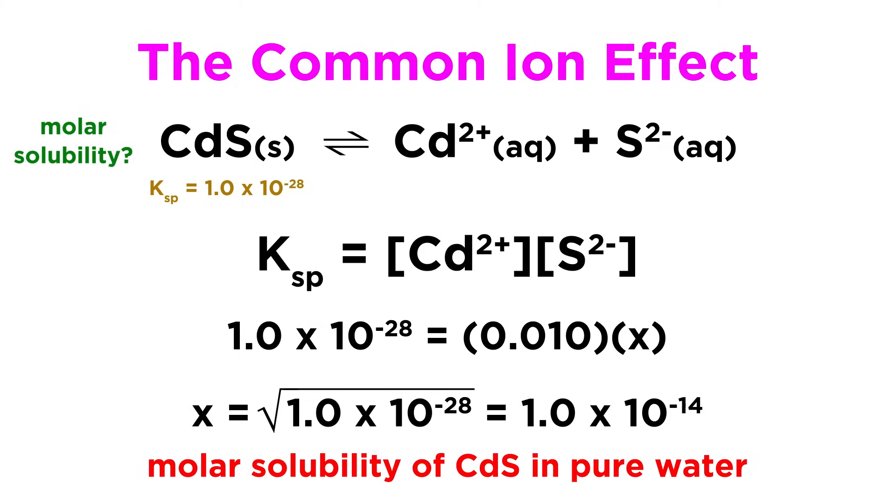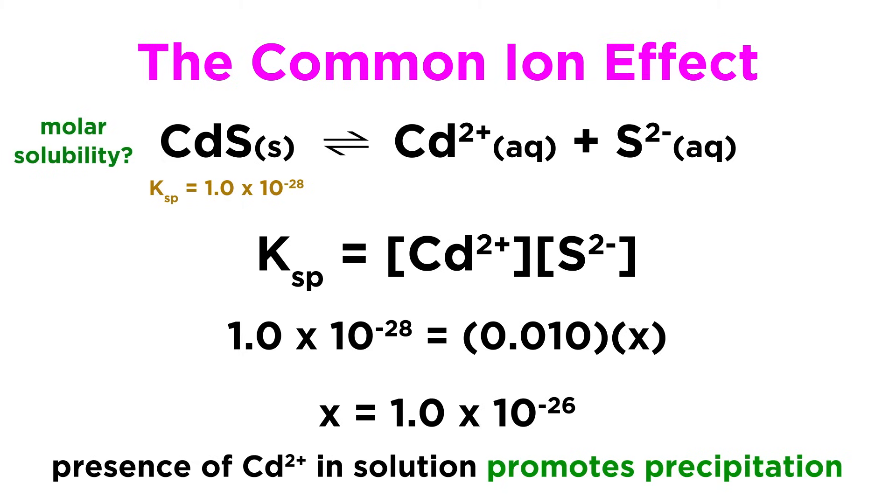Without the cadmium bromide, the molar solubility would simply have been the square root of the solubility product, which would have been significantly larger than the value we just calculated, so the presence of the cadmium ions in solution has reduced the molar solubility and will thus promote precipitation.